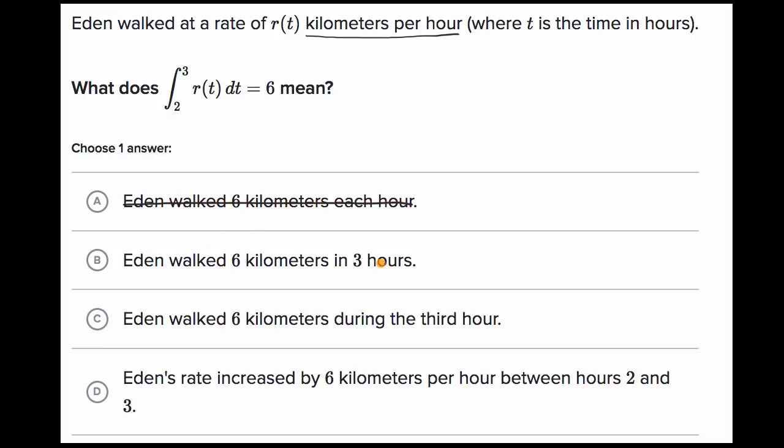Eden walked six kilometers in three hours. This is a common misconception. People will look at the top bound and think this area represented by the definite integral tells us how far in total we have walked up until that point. That is not what this represents. This represents the change in distance from time two to time three. So I'll rule that out.